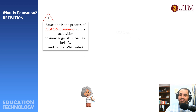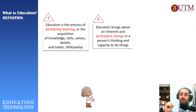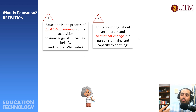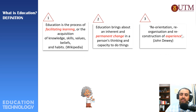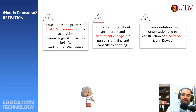Wherever there is knowledge, skills, values, or habits being transferred between two parties, this is called education. Education is also meant to make a permanent change in people — we educate people to change their minds, make them more open-minded and more aware of things. Education is also about reconstruction: for example, if you want to learn about a software, you google it or seek a teacher who is an expert in that field.